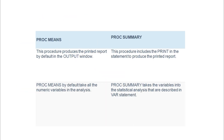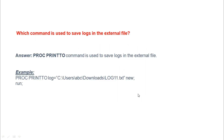The sixteenth question: what is the difference between PROC MEANS and PROC SUMMARY? PROC MEANS produces printed output in the output window by default and includes a PRINT statement to generate a printed report. PROC MEANS takes all numeric variables for analysis by default, while PROC SUMMARY only includes variables specified in the VAR statement for statistical analysis.